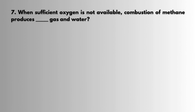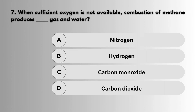Question 7: When sufficient oxygen is not available, combustion of methane produces dash gas and water. Answer: Carbon monoxide.